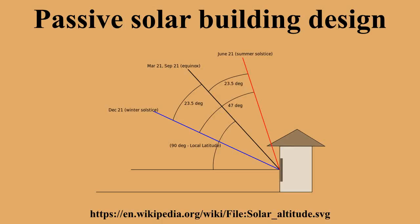Passive solar technologies include direct and indirect solar gain for space heating, solar water heating systems based on the thermosiphon, use of thermal mass and phase change materials for slowing indoor air temperature swings, solar cookers, the solar chimney for enhancing natural ventilation, and earth sheltering.